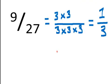Click on the stop sign — give it a whirl. Let's see how you did. You have 9 twenty-sevenths. Well, 9 can be factored as 3 times 3, and 27 can be factored as 3 times 3 times 3.